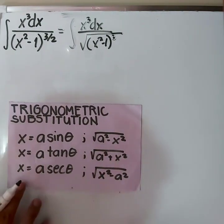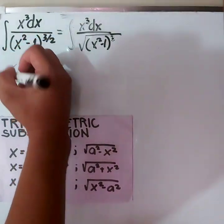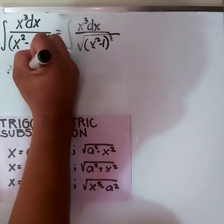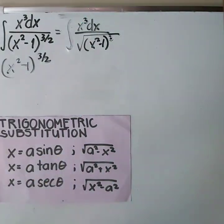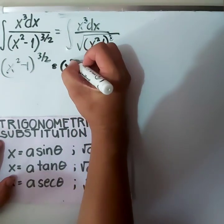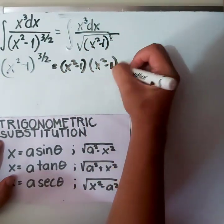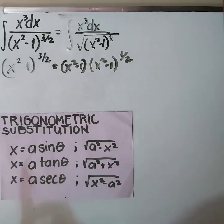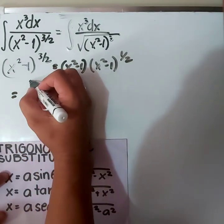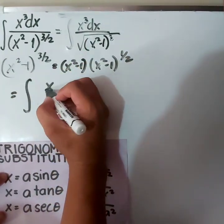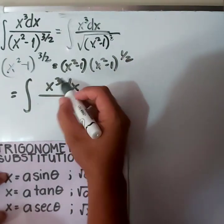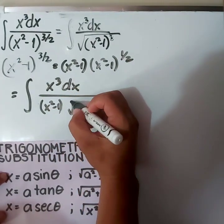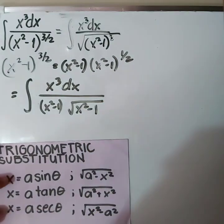First, let us simplify the denominator: x squared minus 1 raised to 3 halves. This is the same as x squared minus 1 times x squared minus 1 raised to 1 half, because 1 plus 1 half equals 3 halves. So our new given will be the integral of x cubed dx all over x squared minus 1 times the square root of x squared minus 1.